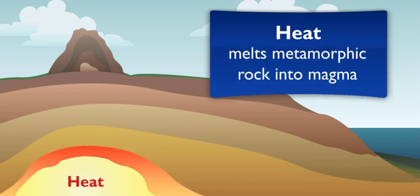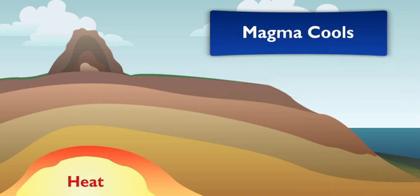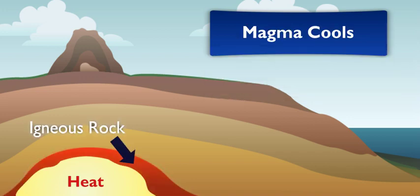Rock melts? Yeah, but it also cools. When that magma cools off inside the Earth, it hardens and becomes igneous rock, like granite.